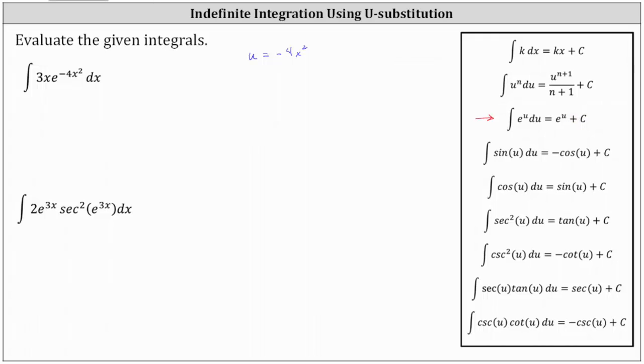Now let's determine du, where du is equal to the derivative of negative 4x squared times dx, which is negative 8x dx.